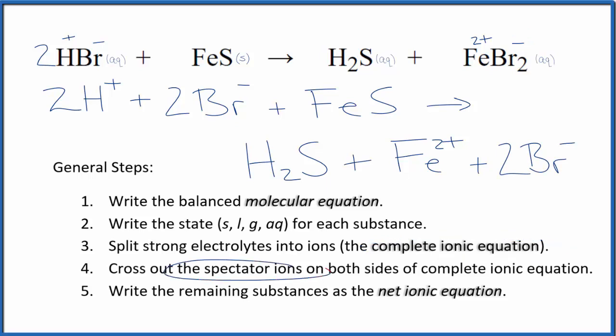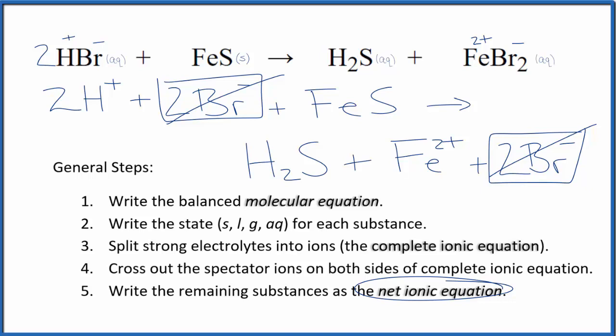Now we can cross out spectator ions. They're the same on both sides. So as I look through here, I see two bromide ions in the reactants and in the products. Those are spectator ions, which we can cross out. But everything else is unique. So this is the net ionic equation here for hydrobromic acid plus iron 2 sulfide. I'll clean this up, write the states, and then let's talk about this aqueous here for a bit.